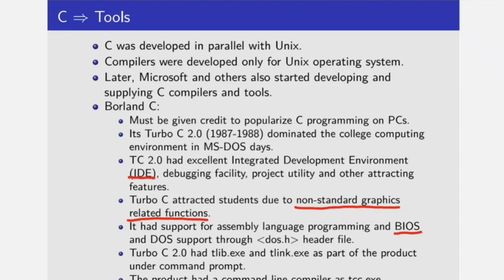It had support for assembly language programming and basic input/output system, and DOS support through the DOS.h header file. We could use the function int86, which was used to generate software interrupts and use the hardware directly. Turbo C 2.0 had tlib.exe and tlink.exe — tlib for librarian, tlink for turbo linker — as part of the product under command prompt. The command line compiler, which most students don't know, is tcc.exe.